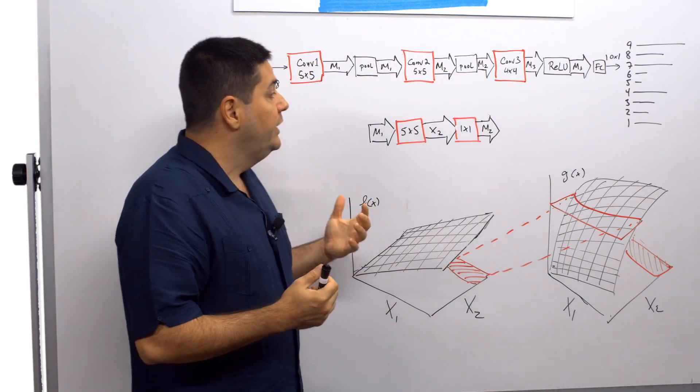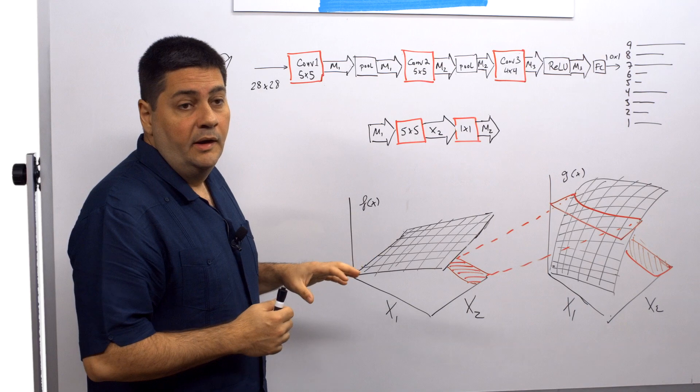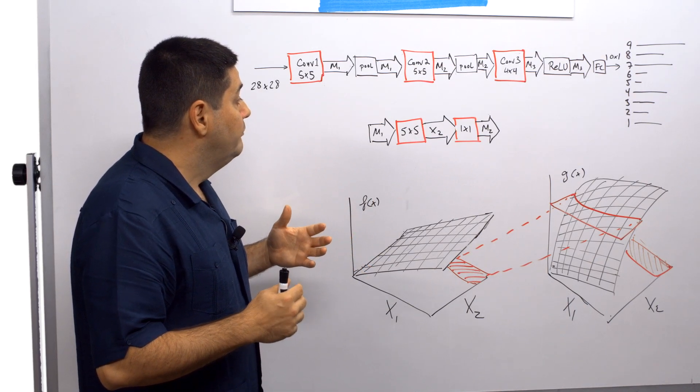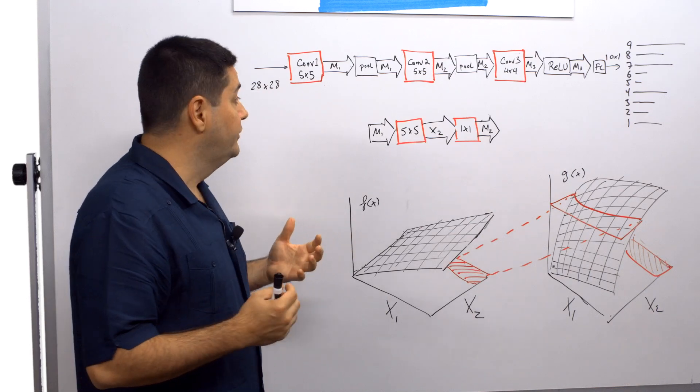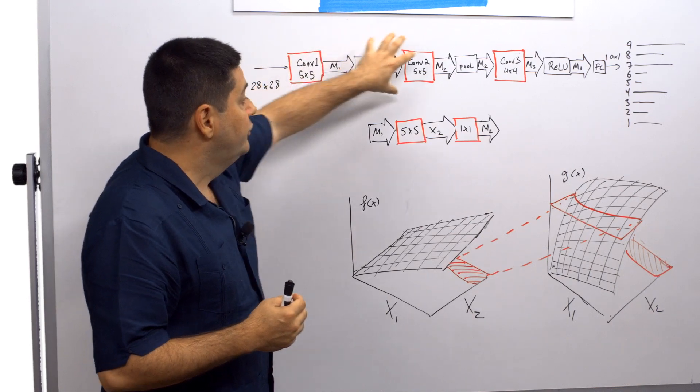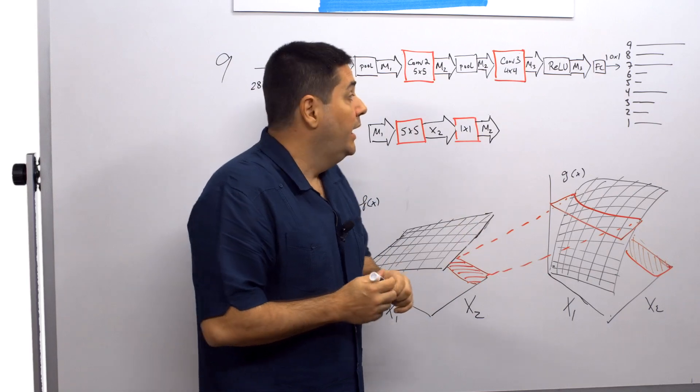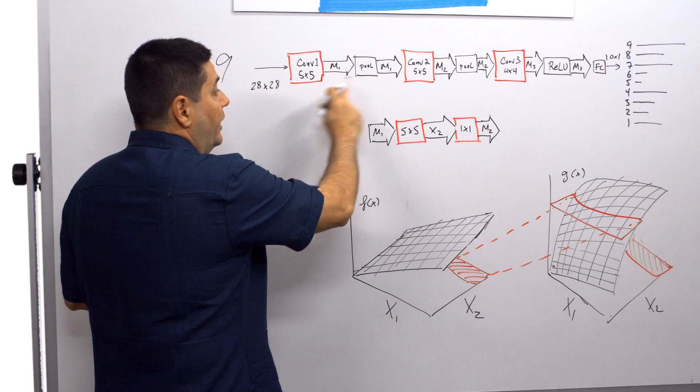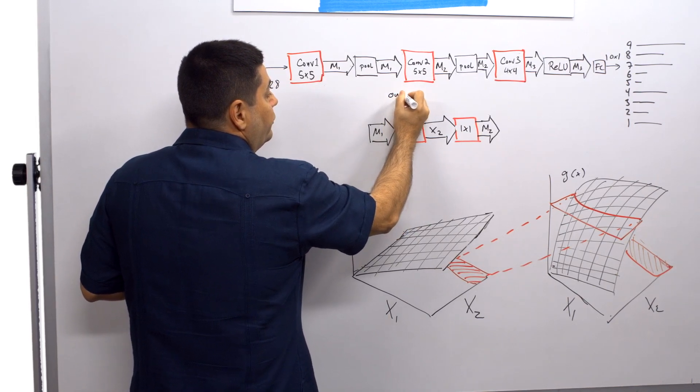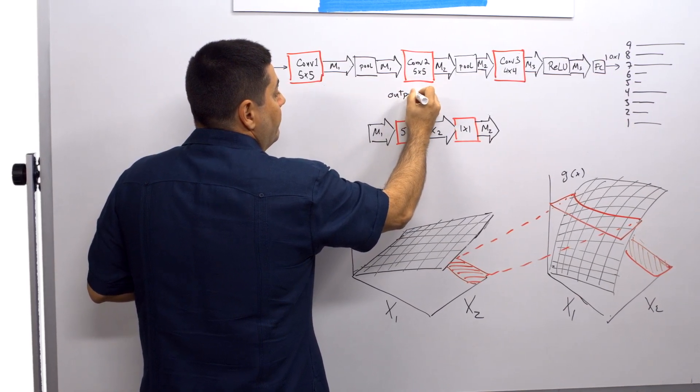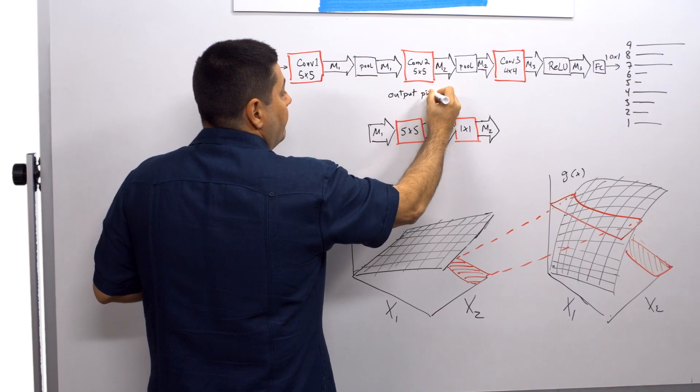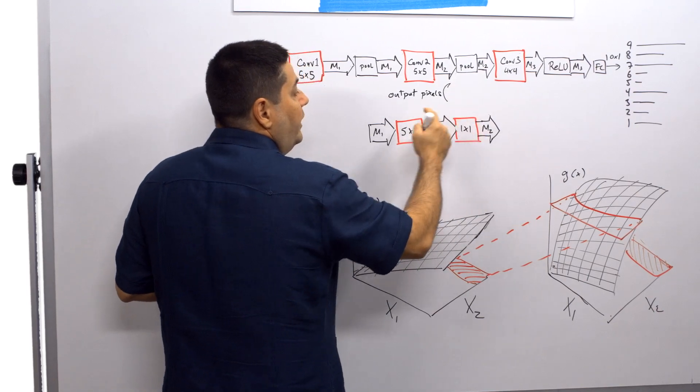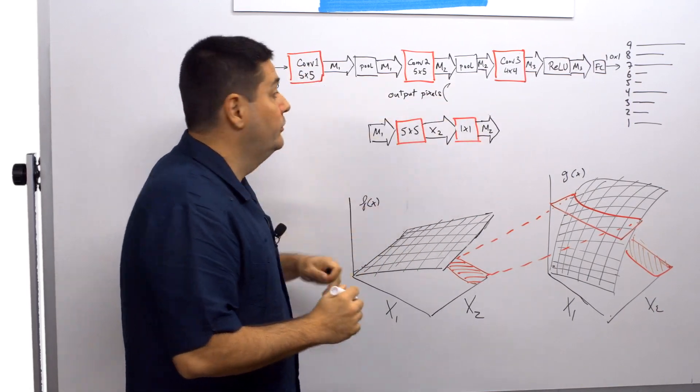So we want to reduce the computational complexity of this network. And the first thing we need to do is to measure what that complexity is. So most of the complexity is going to be in these convolutional layers. And the complexity, the number of multiply accumulates required in each layer is the number of output pixels coming out of here, times the work done per pixel, which is in this case...